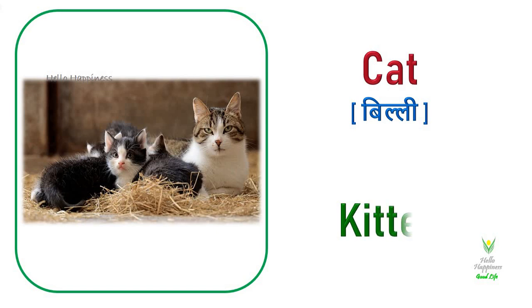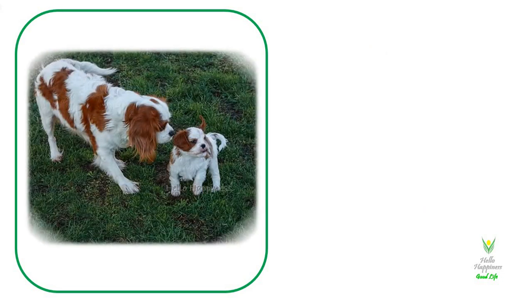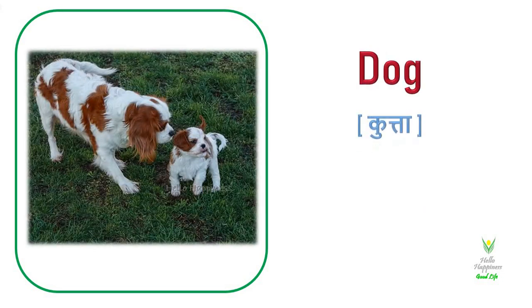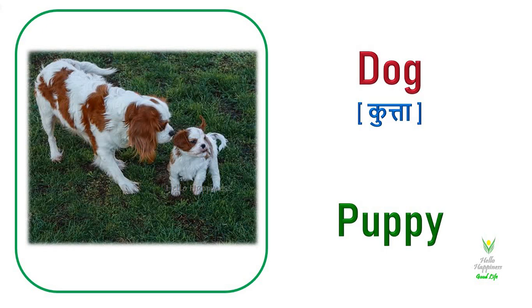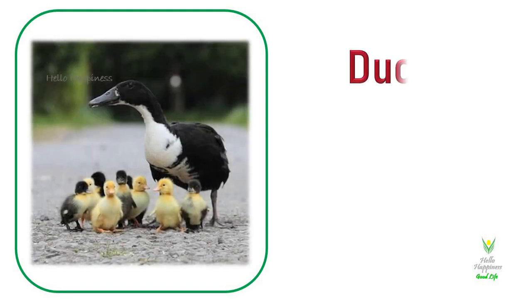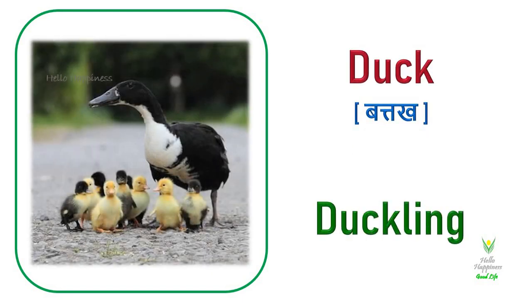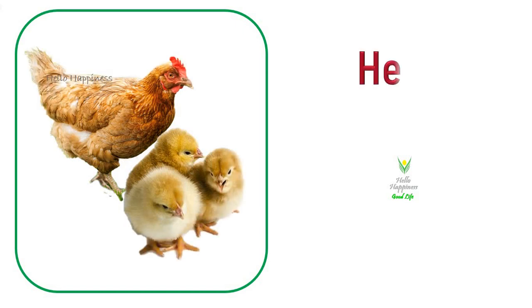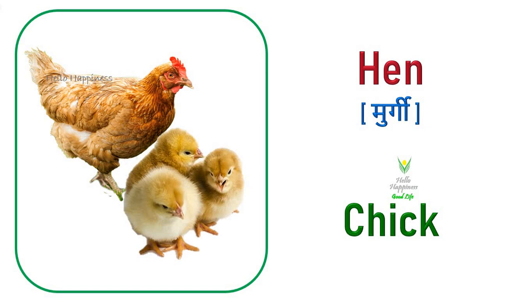Cat. Cat's young one is called a Kitten. Dog. Dog's young one is called a Puppy. Duck. Duck's young one is called a Duckling. Hen. Hen's young one is called a Chick.